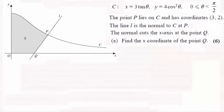Hi there. Now for this part of the question we're told that we've got this curve here C given by the parametric equations up here. And we've got a point P on C which has coordinates (3, 2). So we'll just mark that in as having coordinates (3, 2). And we're told then that this line L is normal to the curve C. And we've got to find out the x coordinate at the point Q where it cuts the x-axis.